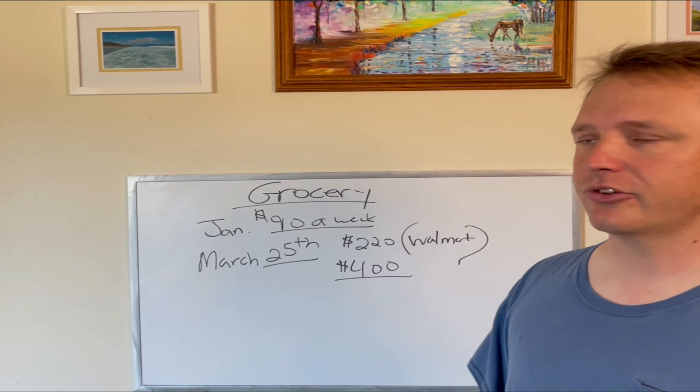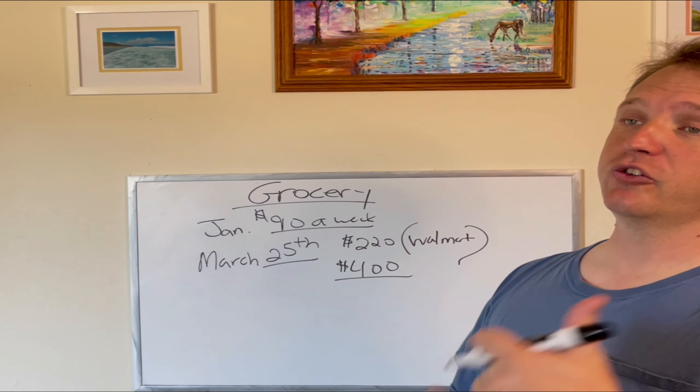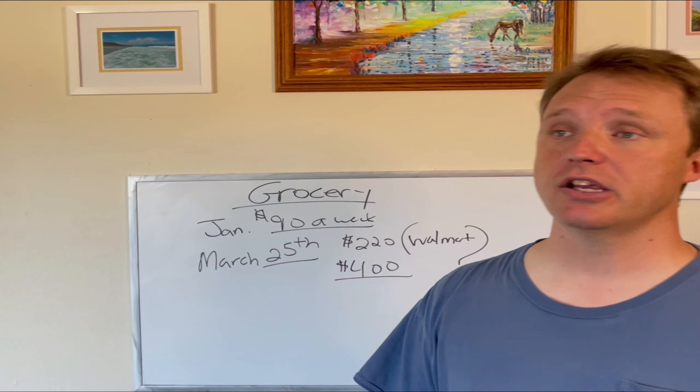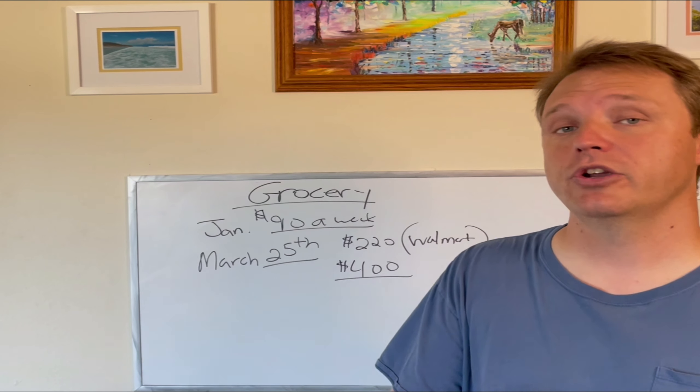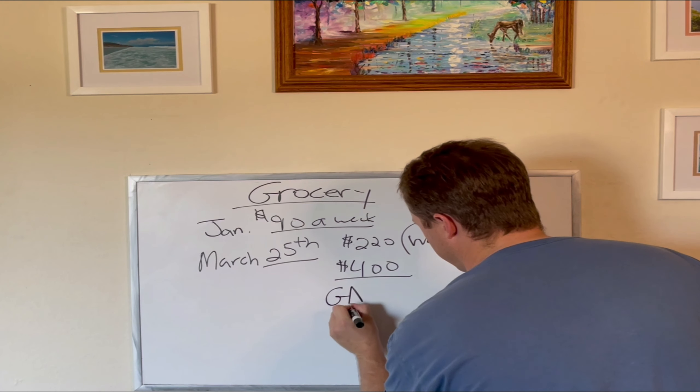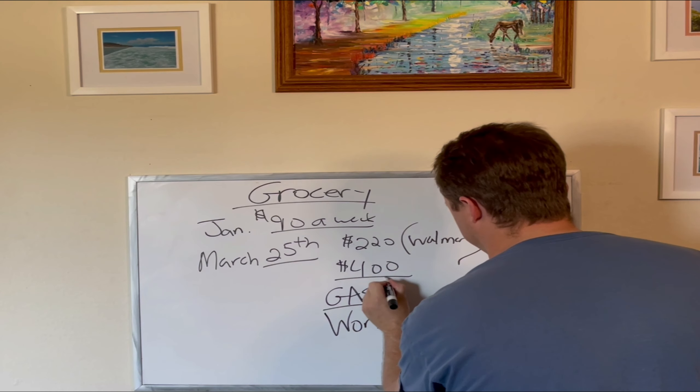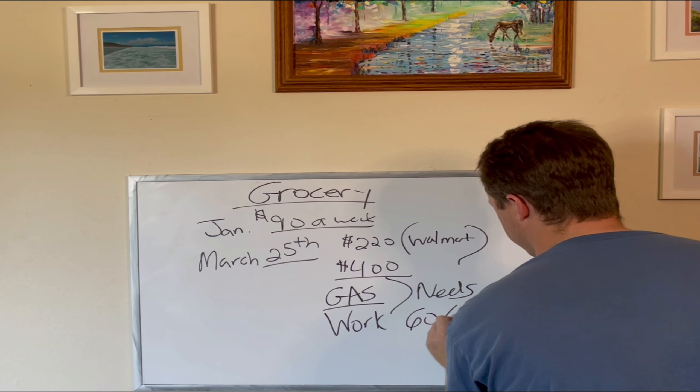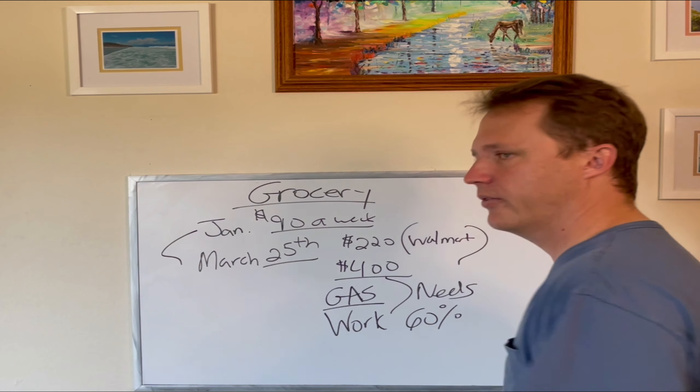So where do you cut back? You start calling the bank and going, can I make a half payment on the car? You start skipping payments on cars, RVs, making partial payments on mortgages or rent. Because what are you going to prioritize? You're going to prioritize food and gasoline right now because of work. Those are the needs. So your needs went up 60%, just under, I'm going to say just under 60% in two months.